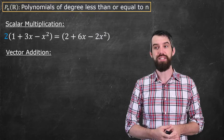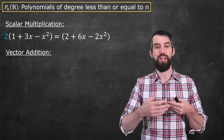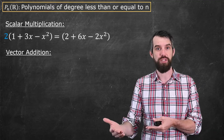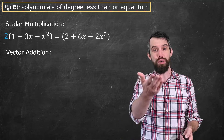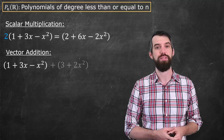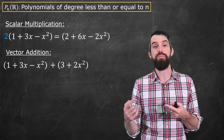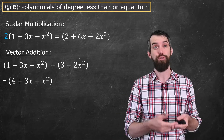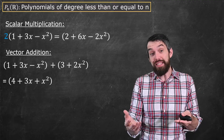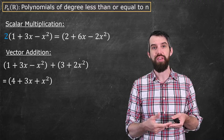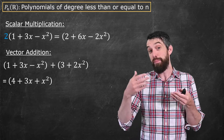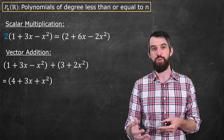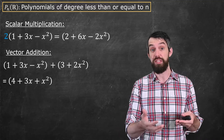For scalar multiplication, if I take a polynomial like 1 + 3x - x² and multiply it by the scalar 2, then the 1 gets multiplied by 2, the 3x becomes 6x, and the -x² becomes -2x². Likewise, if I have two different polynomials and add them term by term, the constants 1 and 3 add to give 4, the 3x and 0x add to give 3x, and the -x² and +2x² give +x². So 4 + 3x + x² is the sum.